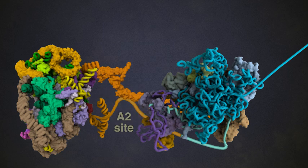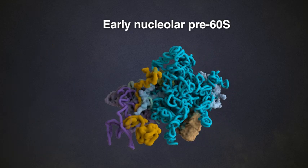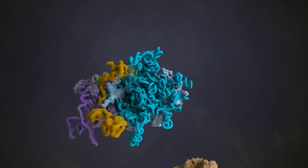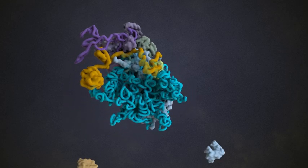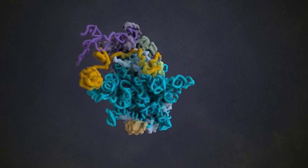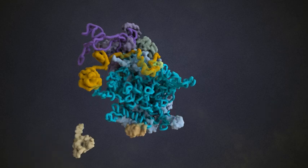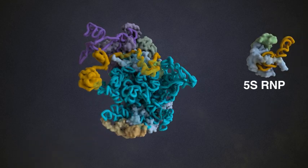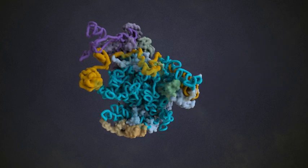RNA cleavage at the A2 site within ITS-1 separates the nascent 60S from the 90S. After another wave of assembly factor recruitment, the 5.8S rRNA has become compact, and 3 out of the 25S subdomains are stably folded. While in the nucleolus, the 5S rMP, composed of 5S rRNA and protein factors, is incorporated into the nascent 60S.